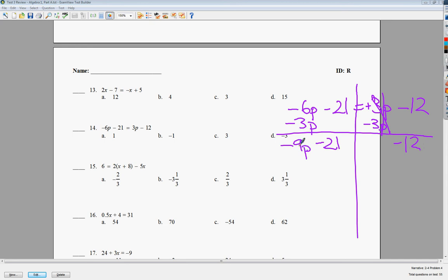Bring down stuff you don't use. Me, friend, friend to friend. Minus 21. To get rid of it, I need to add 21. Bring down negative 9P here. Negative 12 plus 21 is positive 9. I need to divide by negative 9 on both sides. My final answer is P is equal to negative 1. So my answer to number 14 is B. That's it for the first 14.